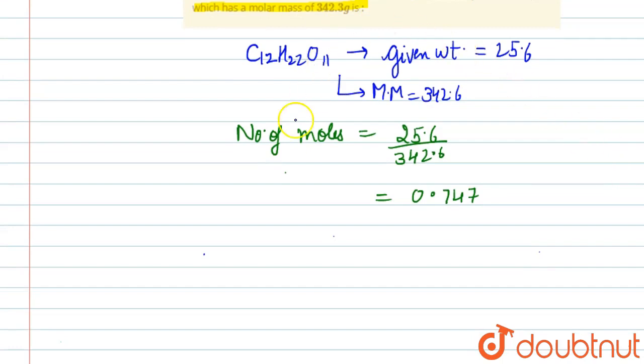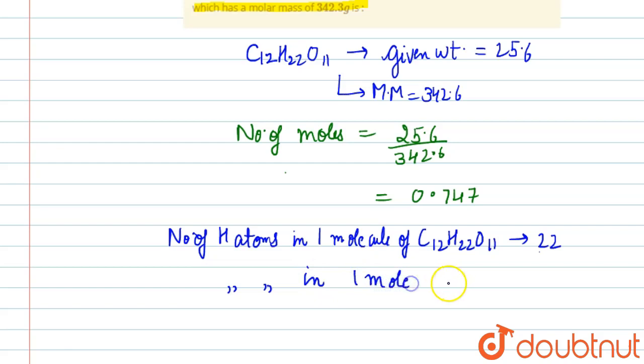Now we know that number of hydrogen atoms in one molecule of C12H22O11 is 22, that is mentioned here. Now, number of atoms in one mole of C12H22O11 will be 22 times Avogadro's number.